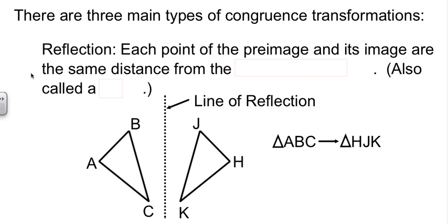The idea here is that each point on the preimage and the image of that same point are the same distance away from the line of reflection. So point A is the same distance away from this line as point H is. And they're just reflected across the line.